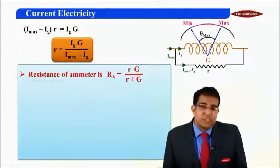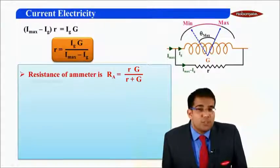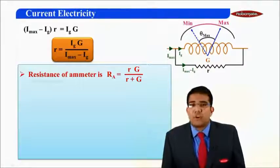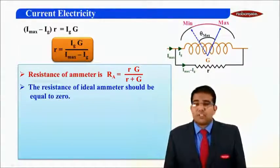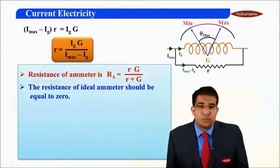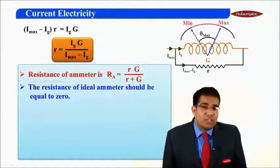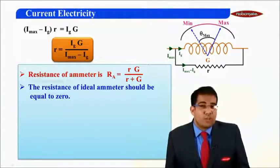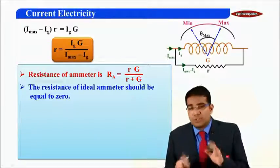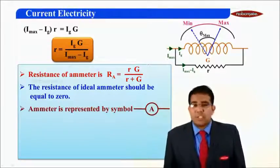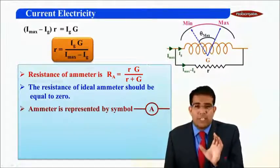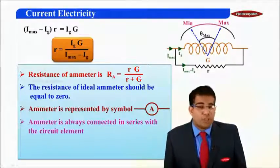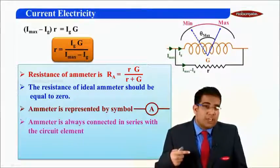Some important points: First, the resistance of the ammeter equals R times G divided by (R plus G), since R and G are in parallel — equivalent to R1·R2/(R1+R2). Second, the resistance of an ideal ammeter should be equal to zero; in practice it comes out to be very small. Third, the ammeter is represented by the symbol capital A in a circle, which will be used in numericals.